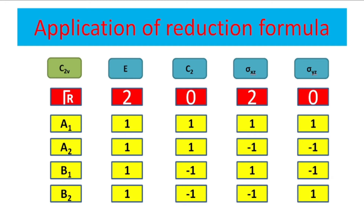Let me consider one example of the C2v point group. Using the bond vector method to obtain the reducible representation for C2v — for a water molecule, two bonds are present. Under the identity operation, two bonds are undisturbed; under C2, all bonds are disturbed; under σxz, two bonds are undisturbed; under σyz, both bonds are disturbed. So the reducible representation is 2, 0, 2, 0. The C2v character table has four irreducible representations, and we want to find which ones are present.